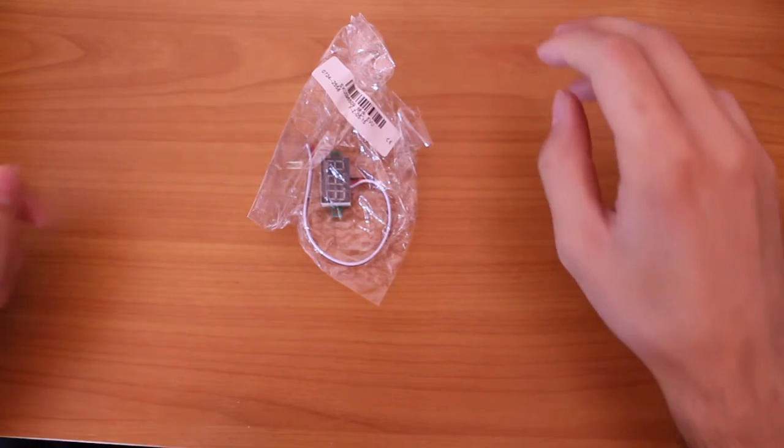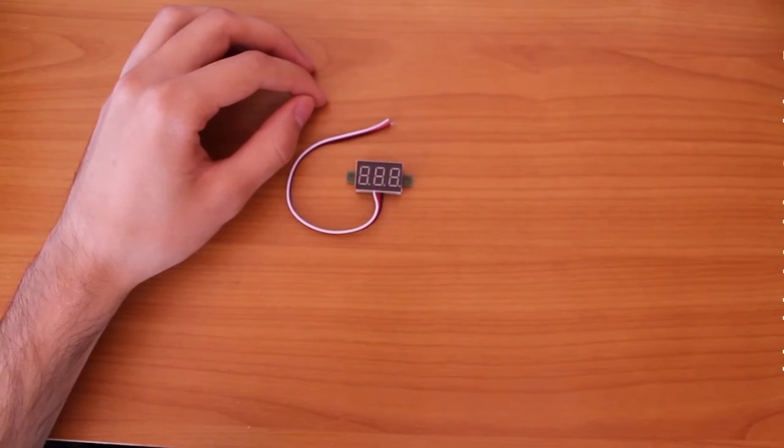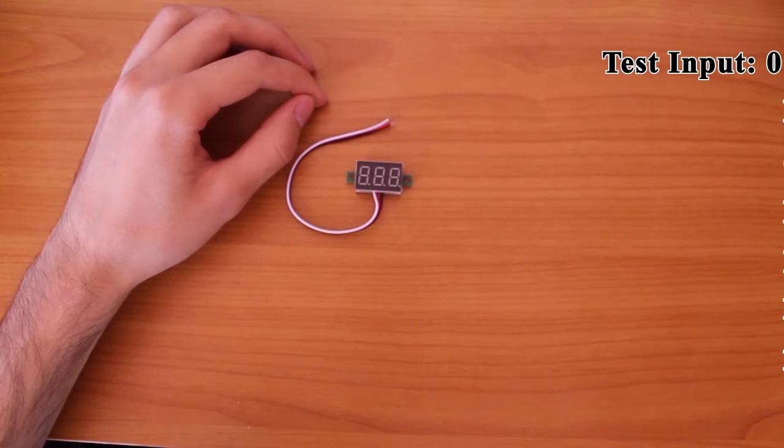Hello, this is a mini voltmeter I got from banggood.com. It can measure DC voltages between 0 and 32 volts.